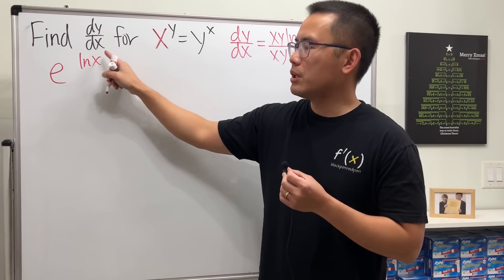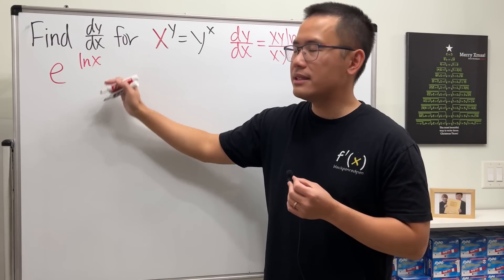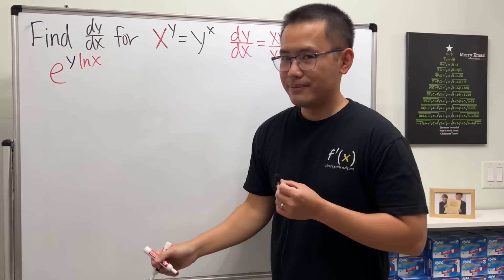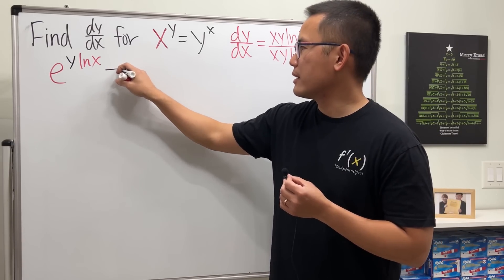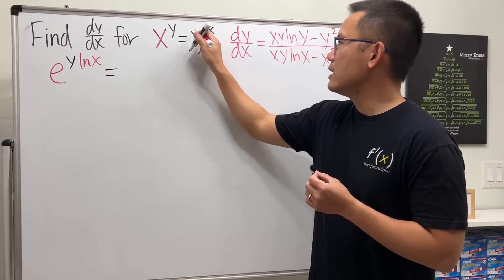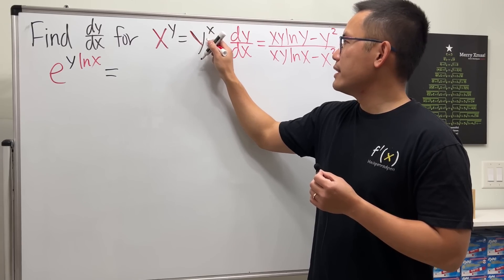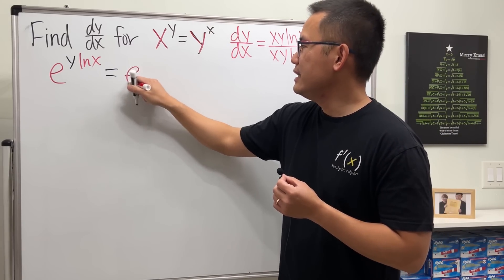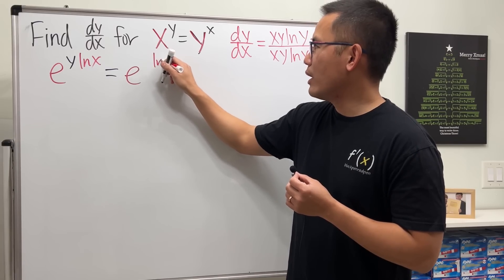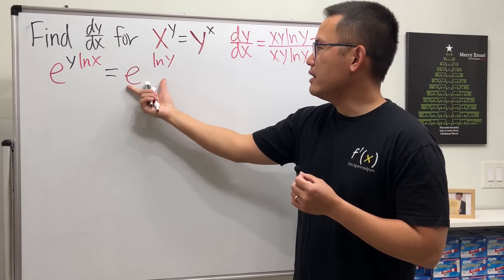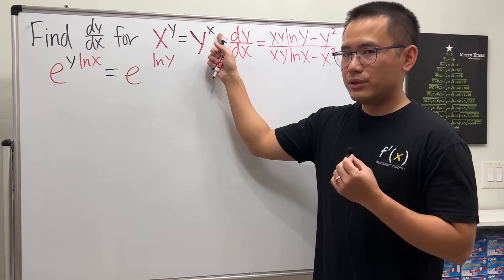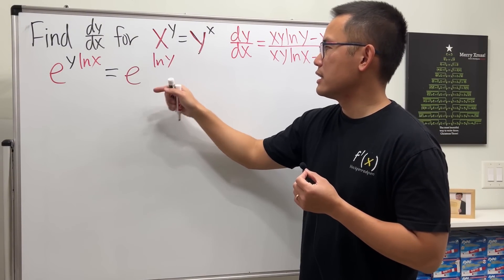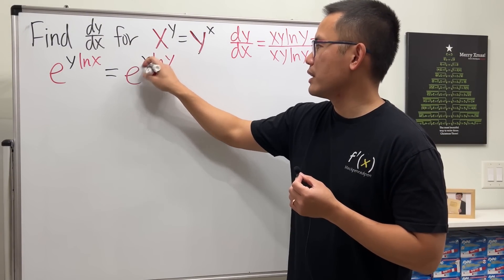We still have the y as the power, and we can multiply the exponents, so let's put y right here. Now let's do the same thing on the right hand side: write y as e to the ln y, then raise it to the x power — just multiply the exponents right here.